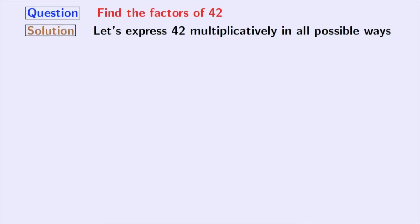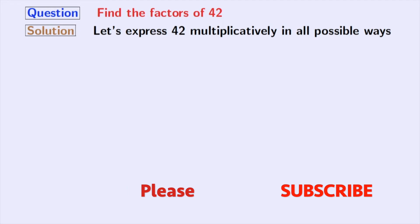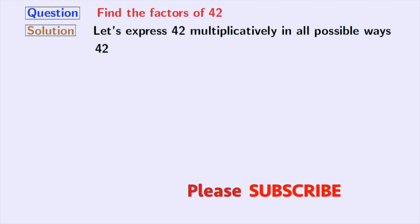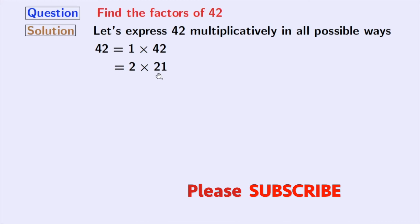Firstly, we will express 42 multiplicatively in all the possible ways. Let's start with 1. We can express 42 as 1 times 42. As 42 is an even number, so 2 will divide it and we see that 42 is equal to 2 times 21.